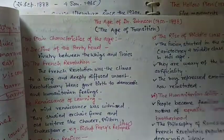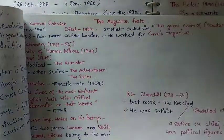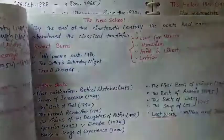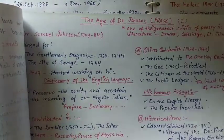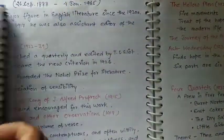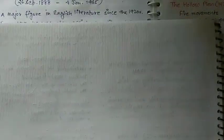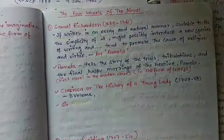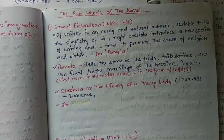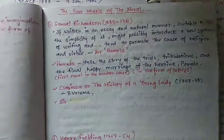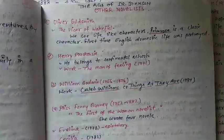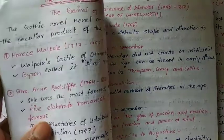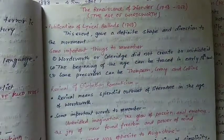The age of Dr. Johnson covers Augustan poets and eminent poets of the transitional period. Later you will see the new school and the prose of Dr. Johnson's age — this is one part of the History of English Literature. In the second part, you can see Dr. Johnson's political prose, the novel, and the four wheels of the novel. Other novelists, the revival of romance, and the renaissance of wonder are also covered.